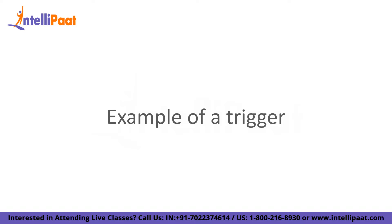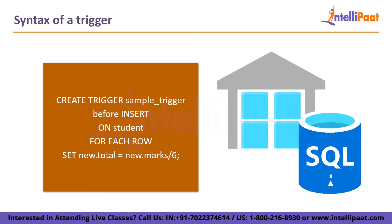Let us look at an example of a trigger. As soon as the student's information is updated in the database, the trigger below attempts to calculate the percentage of the student. The row that is affected in this case is referred to by the NEW keyword.